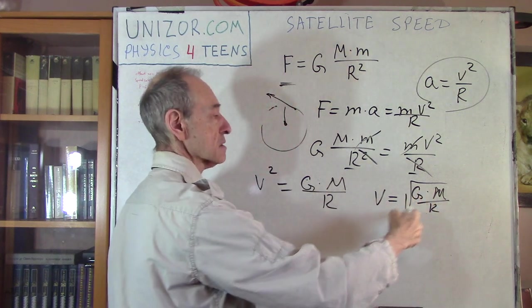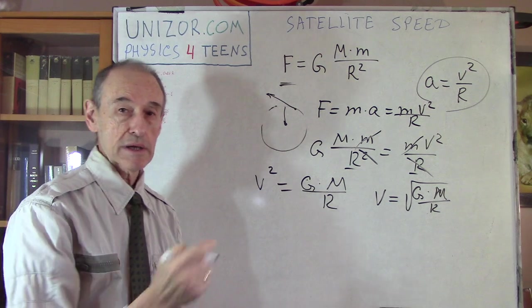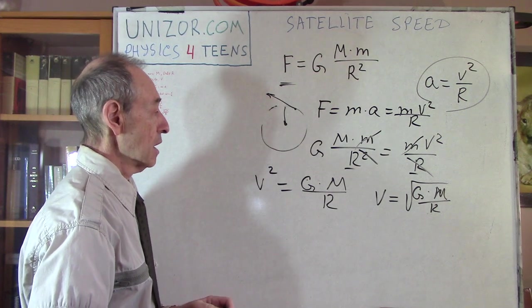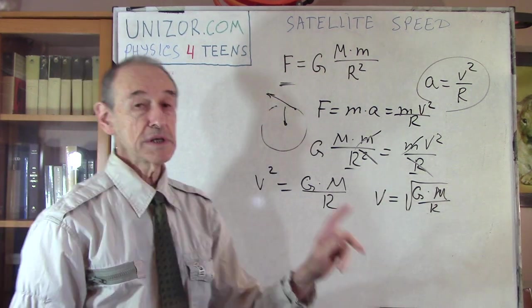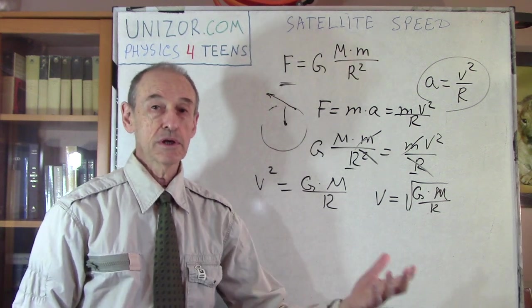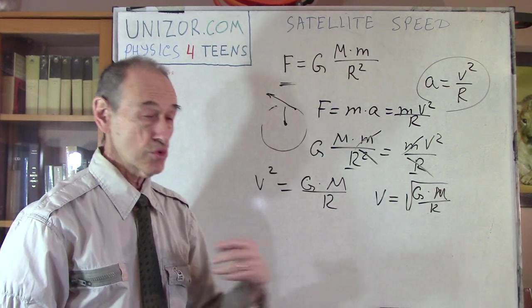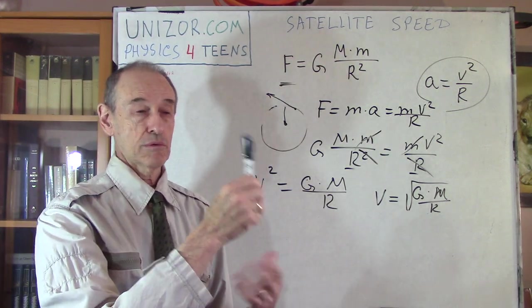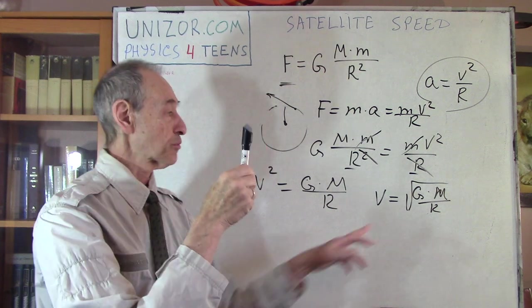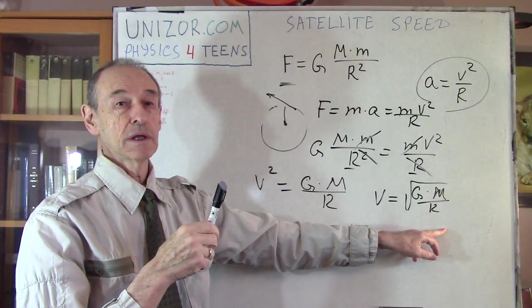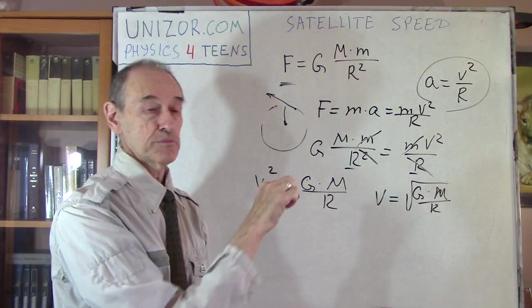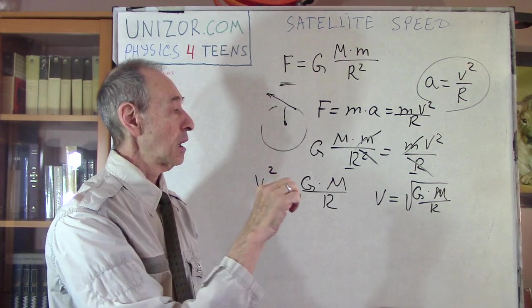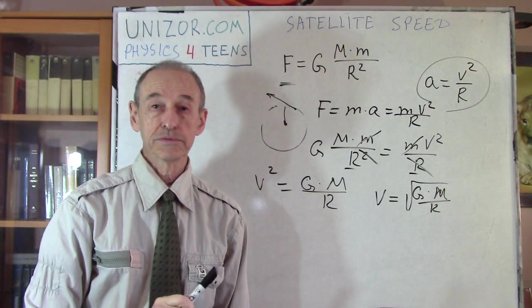Where G is gravitational constant, M is a planet mass and r is the radius distance between the center of the planet and the center of satellite. So this is the speed which we have to really give to a satellite, like a push. So whenever the engine of rocket brings the satellite to a proper distance from the planet, then it should turn and push it with this speed. As soon as the speed is sufficient, you can turn off the engine.